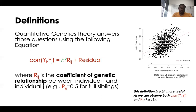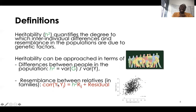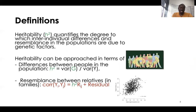To put that together: heritability quantifies the degree to which inter-individual differences and resemblance in the population are due to genetic factors. This can be approached through a more standard definition — the proportion of phenotypic variance explained by genetic factors — but also through the resemblance between relatives, using this fundamental theorem of quantitative genetics that links the phenotypic correlation between relatives and heritability through the coefficient r_ij of genetic relatedness.